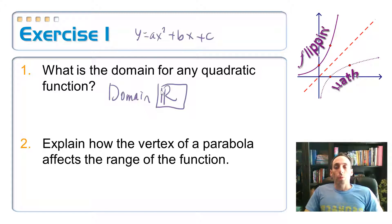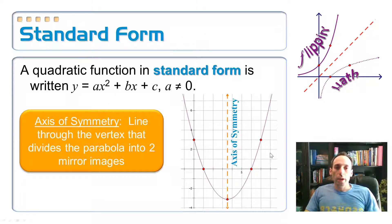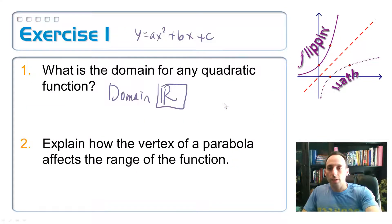Okay, the range though won't always be all real numbers. Explain how the vertex of a parabola affects the range of the function. So let's go back to the picture for just a second. If I look at this picture, range is up and down - it's all the y values. And I can see from this picture that the lowest point on the graph is a little bit below negative three, and my graph would never go below that, but it would go up above it.